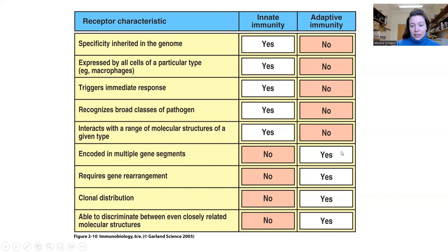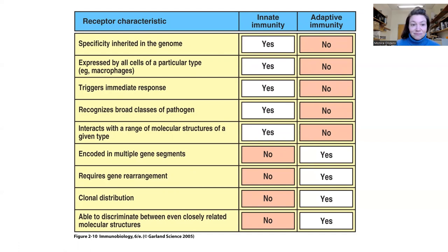In the next couple of lectures when we go over B and T cells specifically, you'll see this happening. Adaptive immune cells are more complicated — they are encoded in multiple gene segments and require gene rearrangement. You'll see how many times a B cell has to rearrange itself before it can make a functional antibody, and a lot of the B cells don't do it correctly and just die.